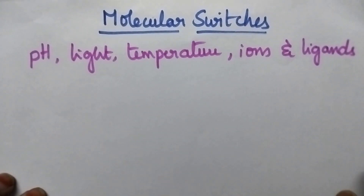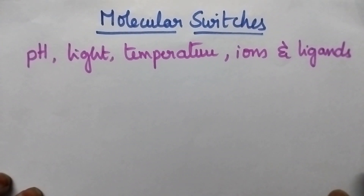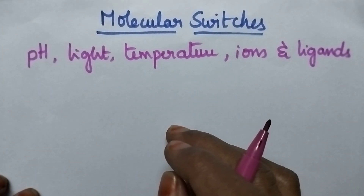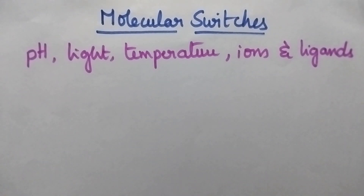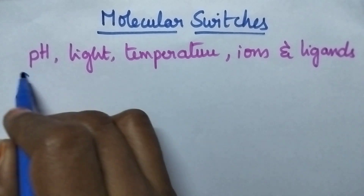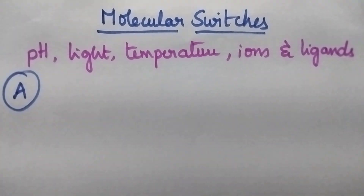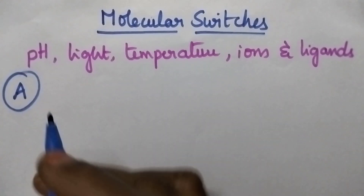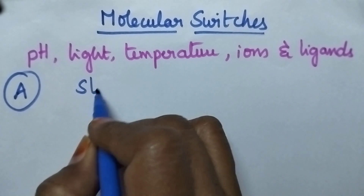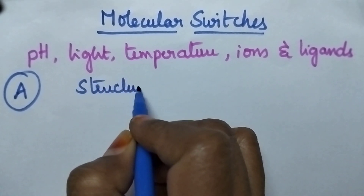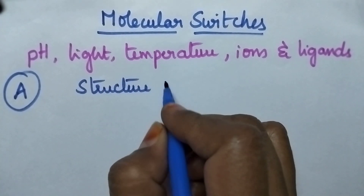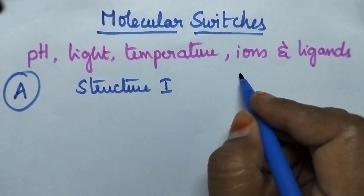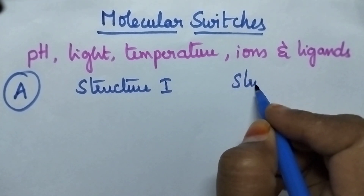Molecules which are capable of modifying their structures are called molecular switches. Let us suppose that molecule A exhibits two different structures: structure 1 and structure 2.